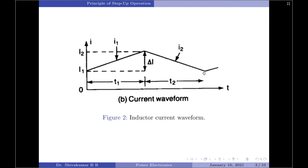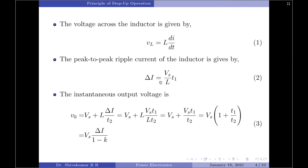Since we have assumed continuous load current operation, the load current I3 at the end of the chopper-open period equals I1 at the beginning of the chopper-closed period. The peak-to-peak ripple current ΔI is given by ΔI = (VS / L) · T1. The instantaneous output voltage is given by V₀ = VS + L · (ΔI / T2). Substituting the expression for ΔI gives V₀ = VS + (VS · T1) / T2, which simplifies to VS · (1 + T1/T2).